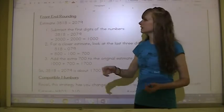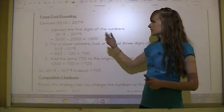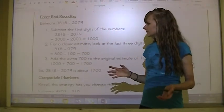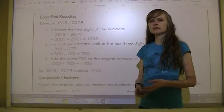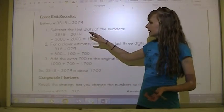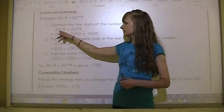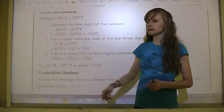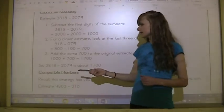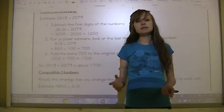We've got front end rounding. Step one: subtract the first digits of the numbers, so we've got 3,000 minus 2,000. We're just looking at the first number, and we get 1,000. That would be rounding to the nearest thousands. Then you could do a closer estimate: subtract the ones in the hundreds, so 800 minus 100 equals 700. Add the extra 700 to the original estimate of 1,000, so 1,000 plus 700 equals 1,700.